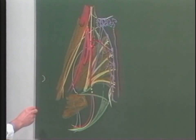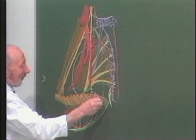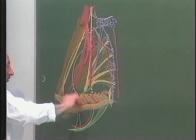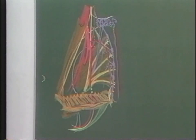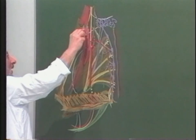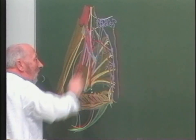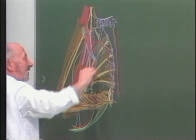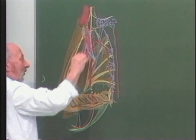Nous sommes ici en regard du plancher pelvien, constitué par le muscle levator ani, le releveur de l'anus, dont voilà le contingent postérieur. En dessous, nous sommes à l'aplomb du plancher périnéal. Ces artères vont être accompagnées par les plexus veineux, très richement anastomotiques, plexus veineux qui viennent au contact des éléments nerveux.